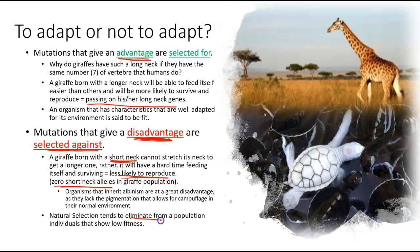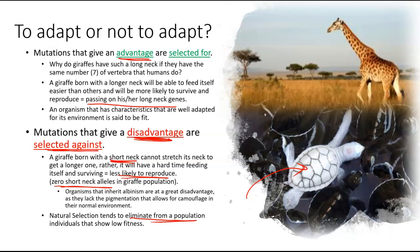Natural selection tends to eliminate from a population individuals that show low fitness, like albino organisms. Albino organisms in the wild typically don't survive and therefore don't establish substantial populations. In captivity they can live a long and prosperous life alongside non-albino individuals, but they're less likely to survive in the wild, and natural selection is a wild process.